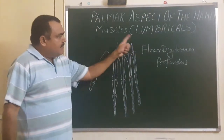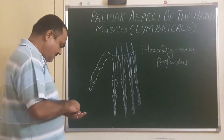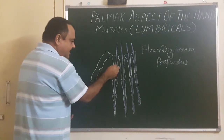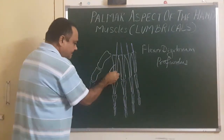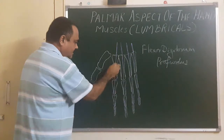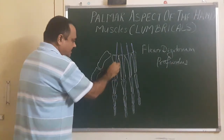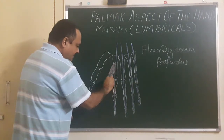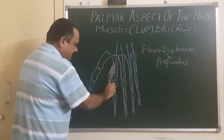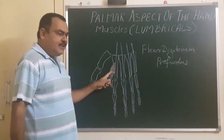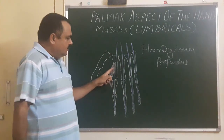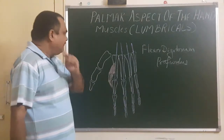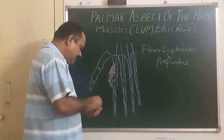The lumbrical muscle takes origin from the radial side of the tendon. This is the first lumbrical — it takes origin from the radial side of the first tendon, which is the tendon for the index finger of the flexor digitorum profundus.